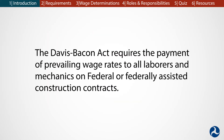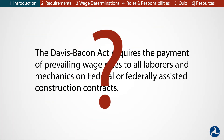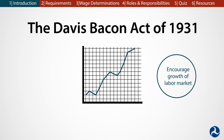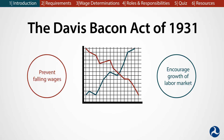The Davis-Bacon Act, or DBA for short, is a law that requires the payment of prevailing wage rates to all laborers and mechanics that work on federal or federally assisted construction contracts.